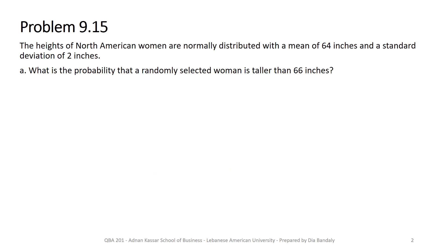In this problem, we are given that the heights of North American women are normally distributed with a mean of 64 inches and a standard deviation of 2 inches. Remember, this is the population. What's the probability that a randomly selected woman is taller than 66 inches? Let's define our variable — we'll call it x — where x is the height of a North American woman. We are not yet talking about drawing a sample.